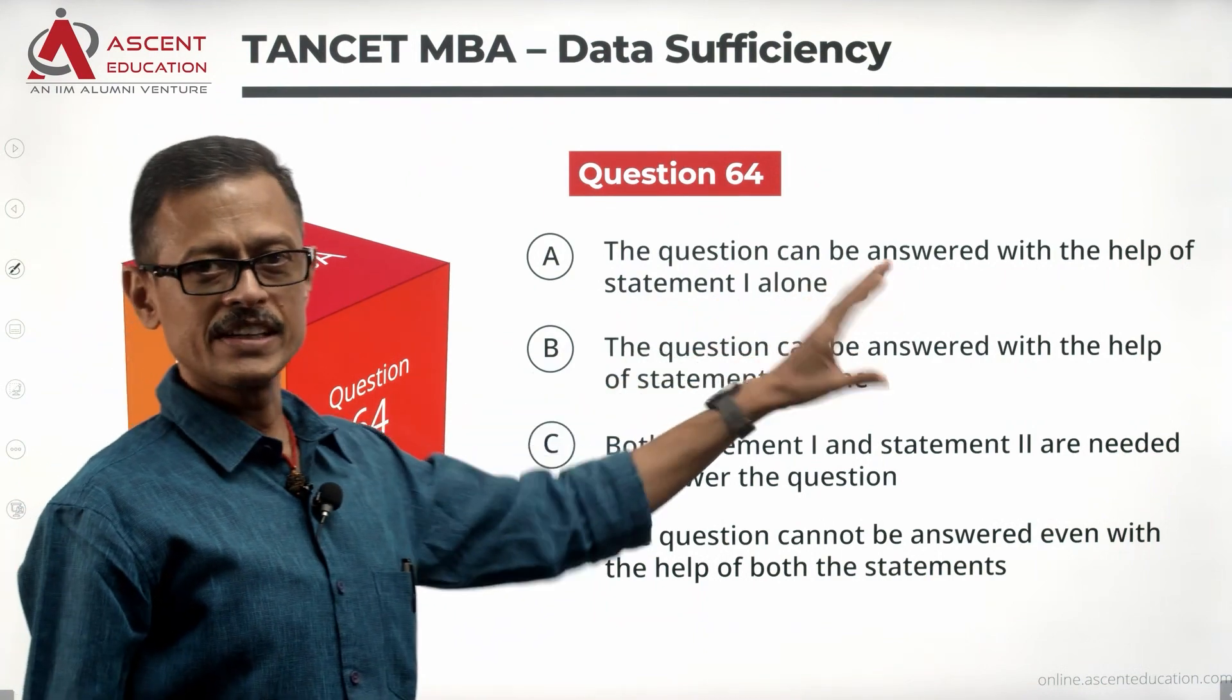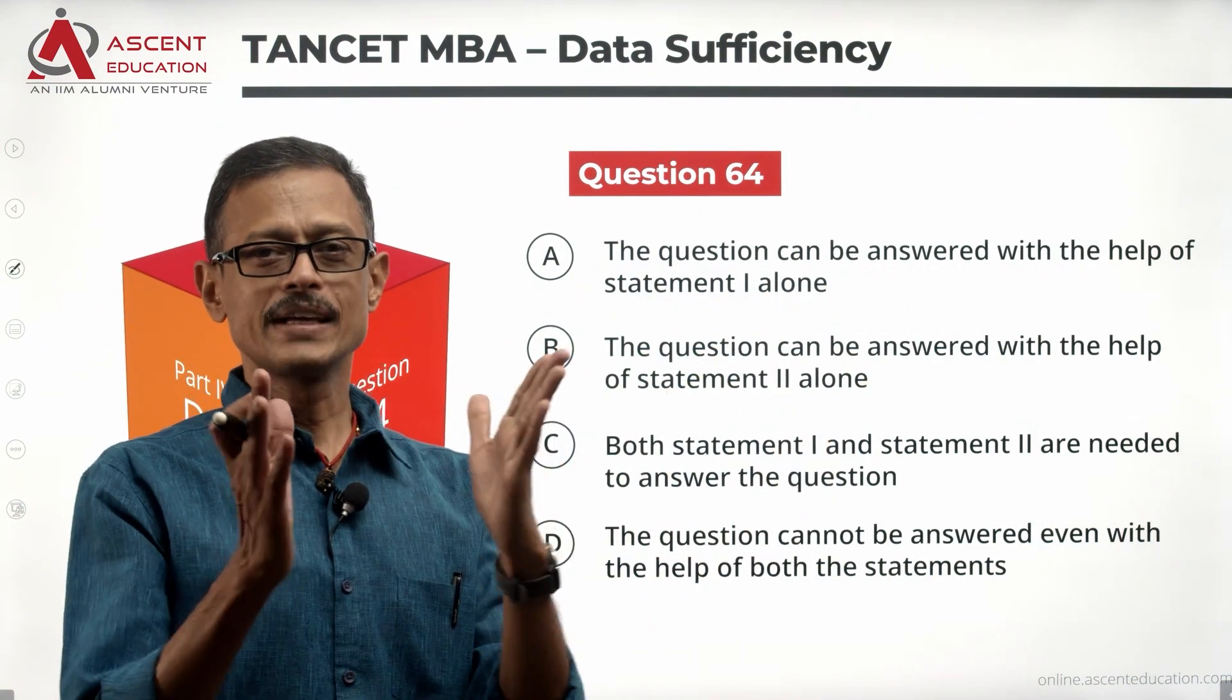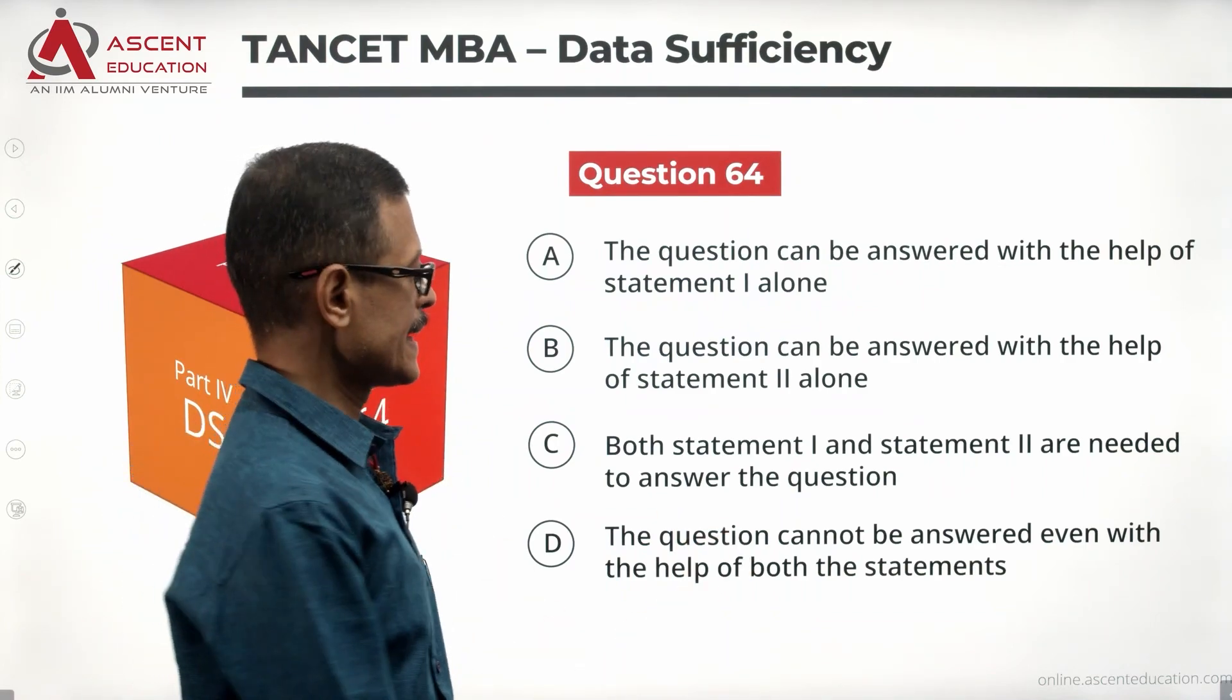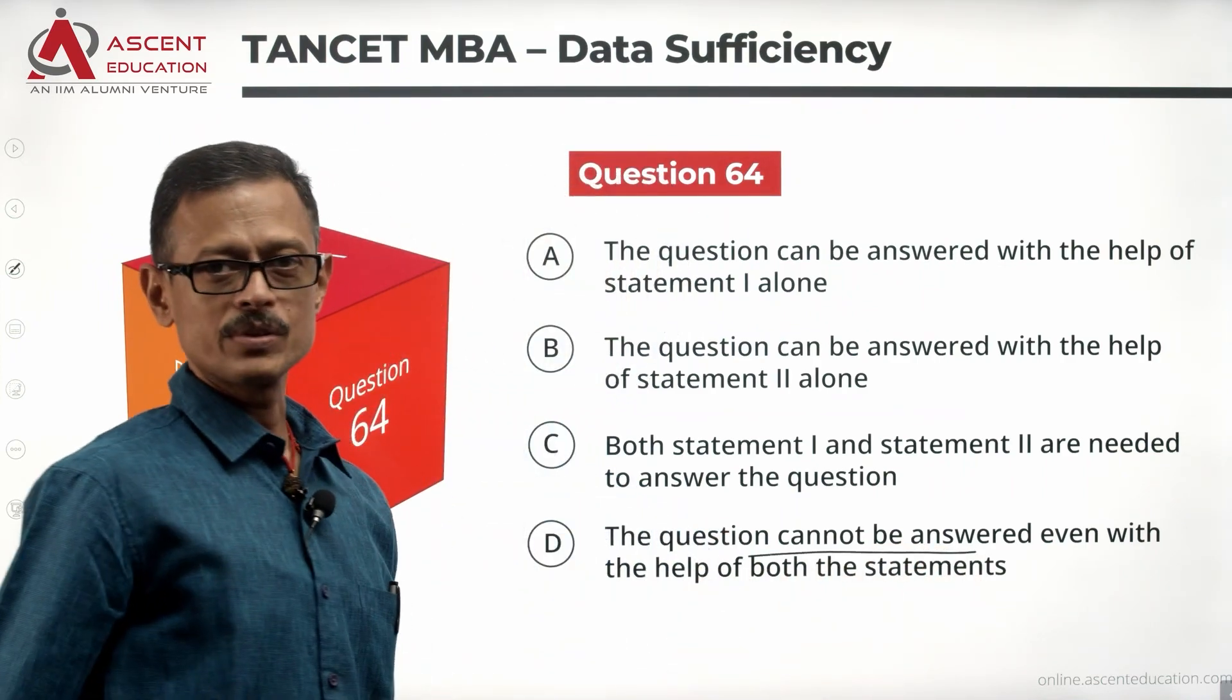Take a look at the answer options. One alone is sufficient is A, two alone is sufficient is B. Together, if together the data is not sufficient, then the answer option is D.